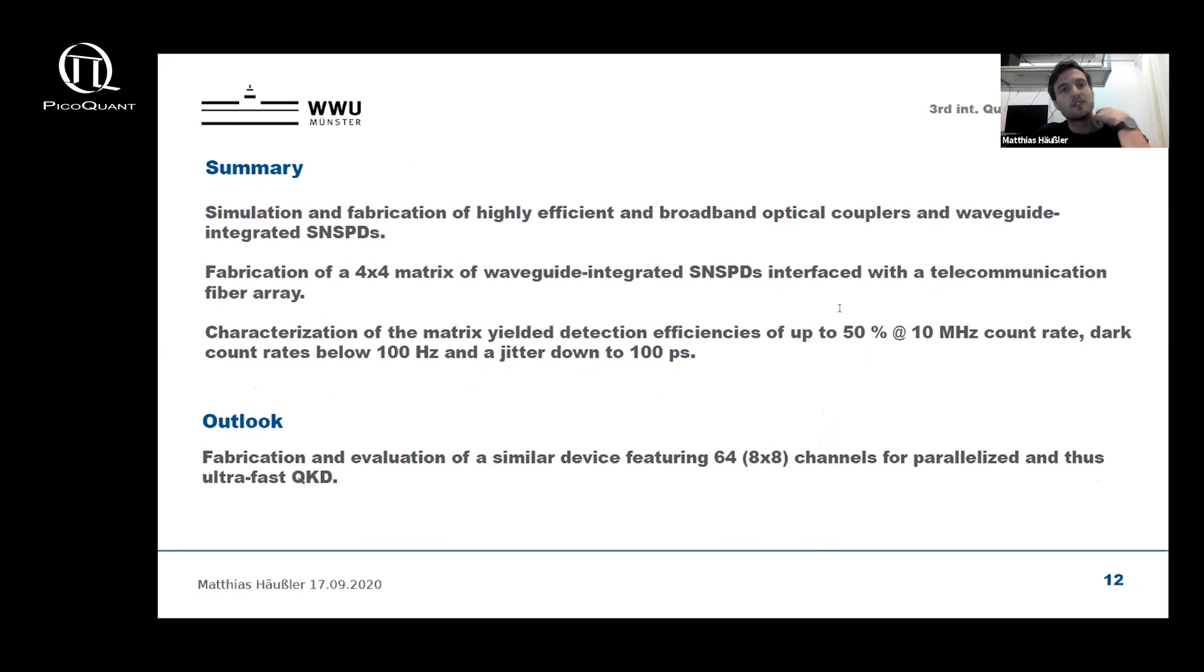Let me summarize the work that I just presented to you. We've simulated and fabricated highly efficient and broadband optical couplers and waveguide integrated SNSPDs. We fabricated a matrix of waveguide integrated SNSPDs interfaced with telecom fibers, and we characterized this matrix and found a maximum detection efficiency of close to 50 percent at 10 megahertz count rate and a dark count rate below 100 hertz and a jitter down to 100 picoseconds. For the COW protocol, this jitter value means that Alice can send her bits into the fiber channel with a rate of up to a few gigabits per second, and the maximal raw bit rate is limited by the maximum count rate of the detector to 10 megabits per second per channel. Due to the low dark count rate, the system in general is also interesting for QKD over large distances.